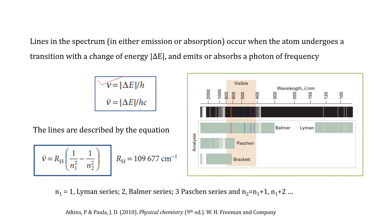It produces a spectrum of series of lines as shown in the figure here. The lines are described by the equation nu bar equals RH into 1 by N1 square minus 1 by N2 square, where RH is the Rydberg constant and nu bar is the wave number.